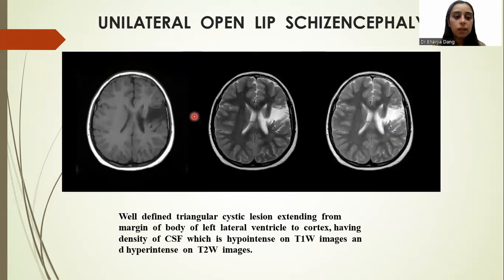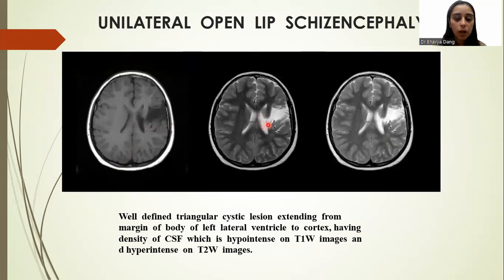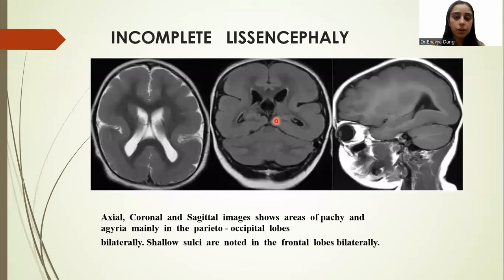These are unilateral open-lip schizencephaly cases. These are T1 and T2 axial-weighted images in which we can see a well-defined triangular cystic lesion extending from the margin of the body of the left lateral ventricle to the cortex, having CSF density — hypointense on T1-weighted images and hyperintense on T2-weighted images.